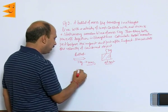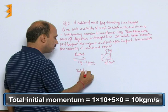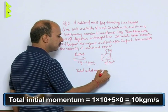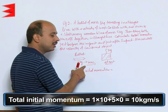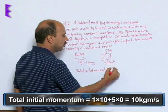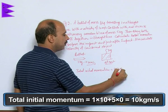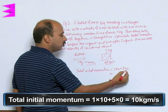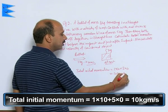So, total initial momentum we can write: total initial momentum is equal to momentum of this body plus momentum of this. So we can write 1 into 10 plus here 5 into 0 because it is at rest. So we will be getting only 10 kg meter per second.